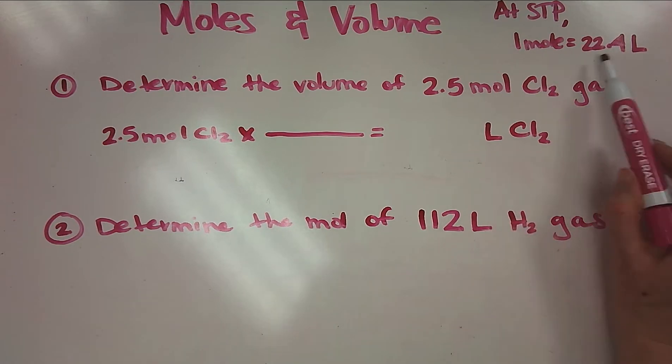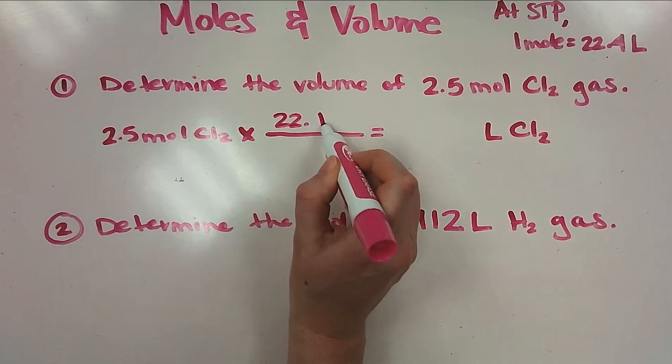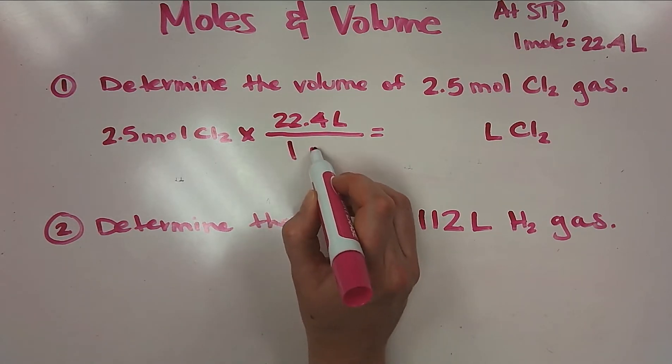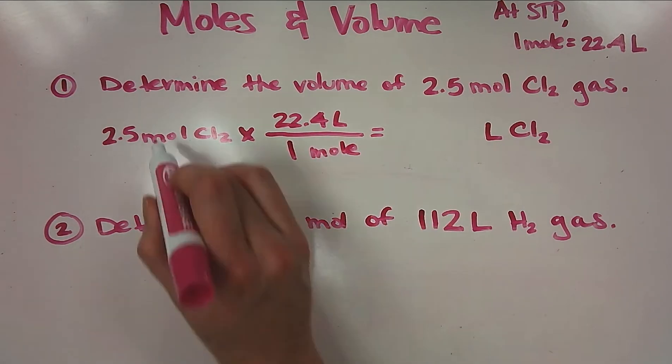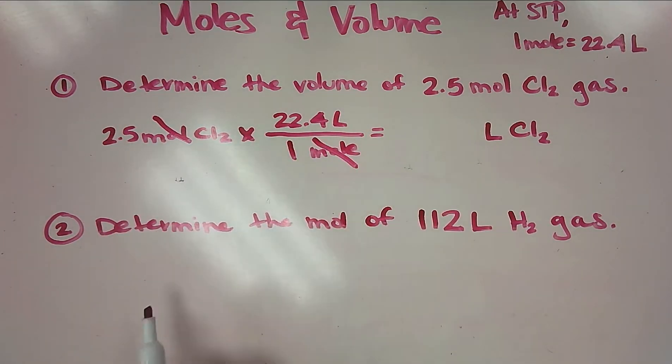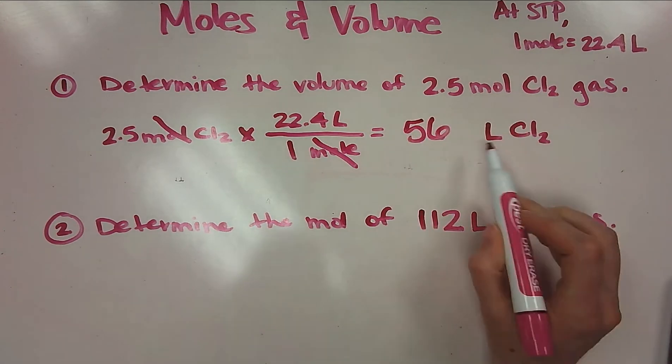If I want to solve for liters, I need to put this half on top. So 22.4 liters—remember this means is equal to one mole. Another reason why I put mole on the bottom is so that my units will cancel. Now it's just a calculator problem: 2.5 times 22.4. And I have 56 liters of chlorine gas.